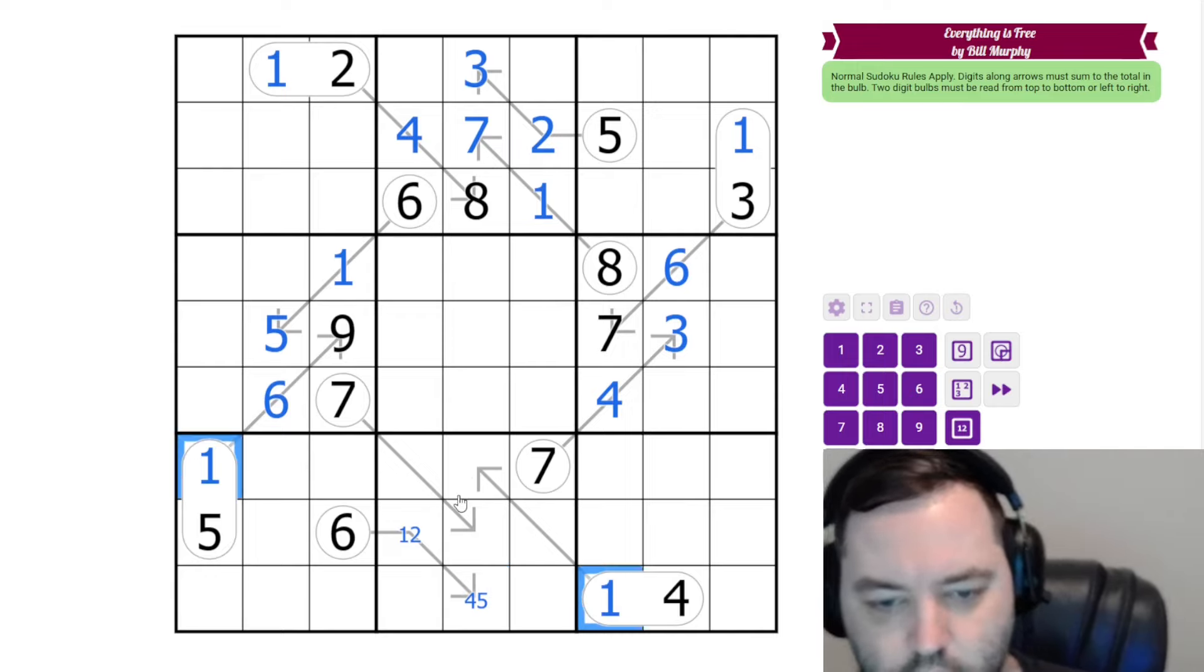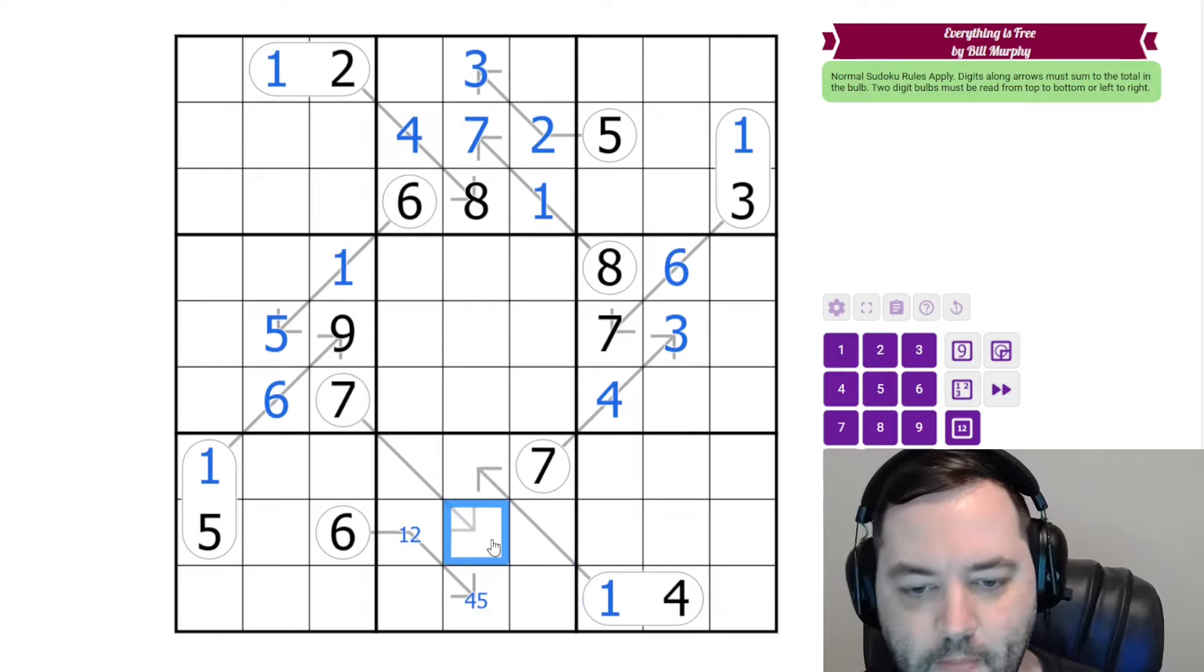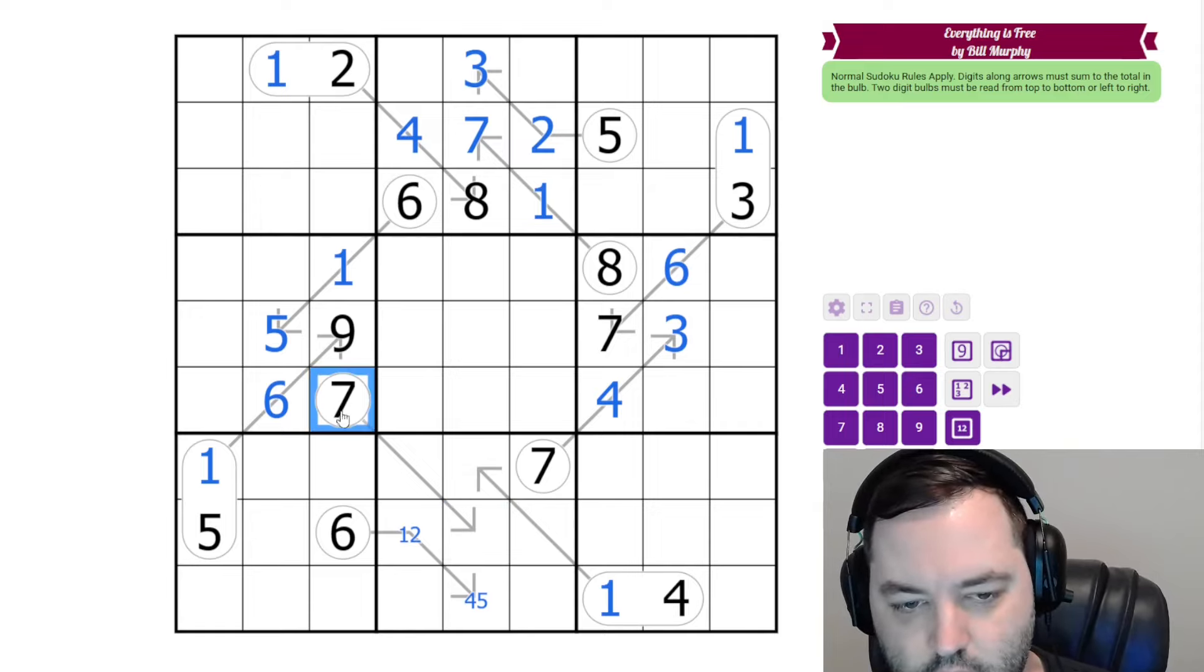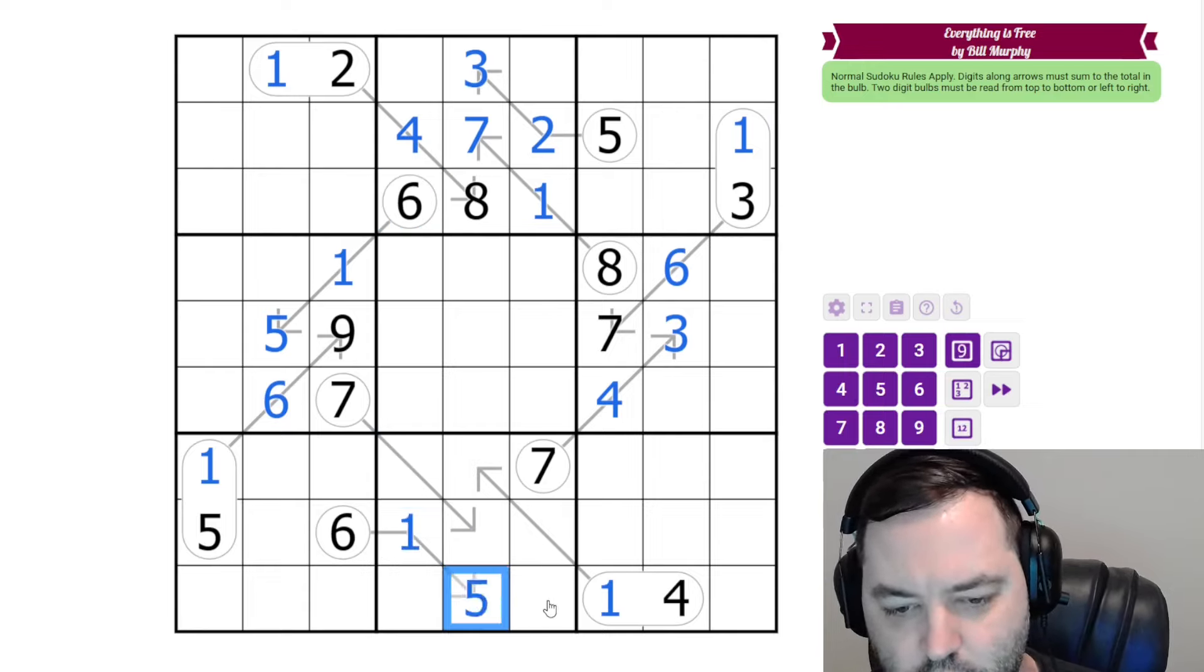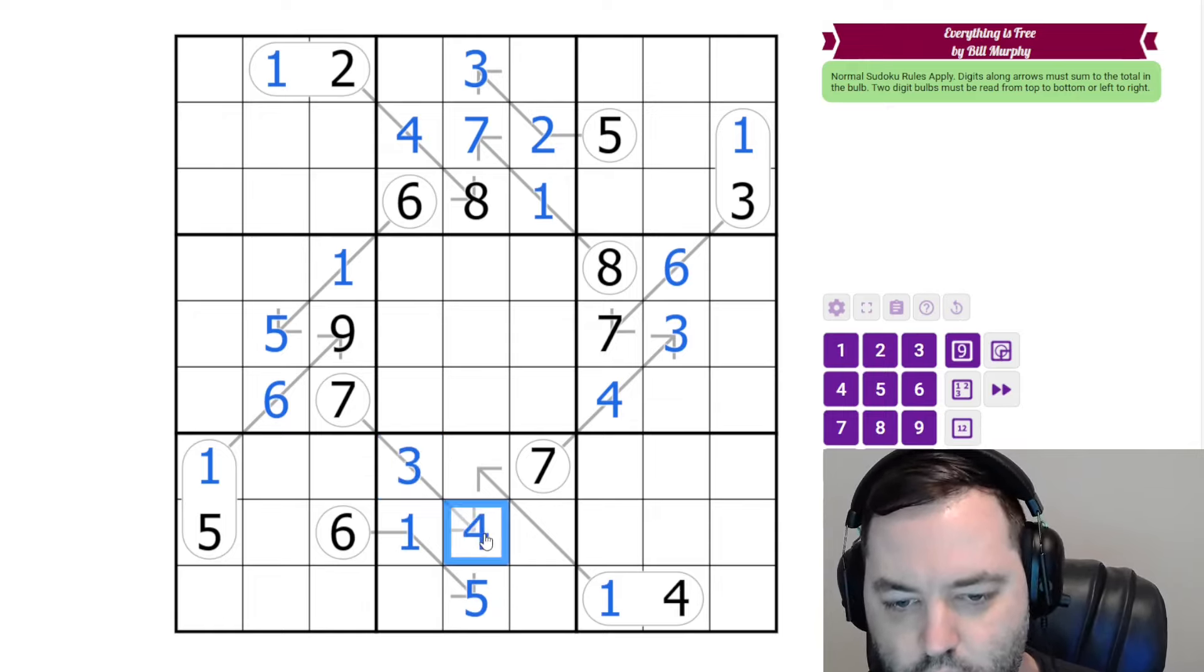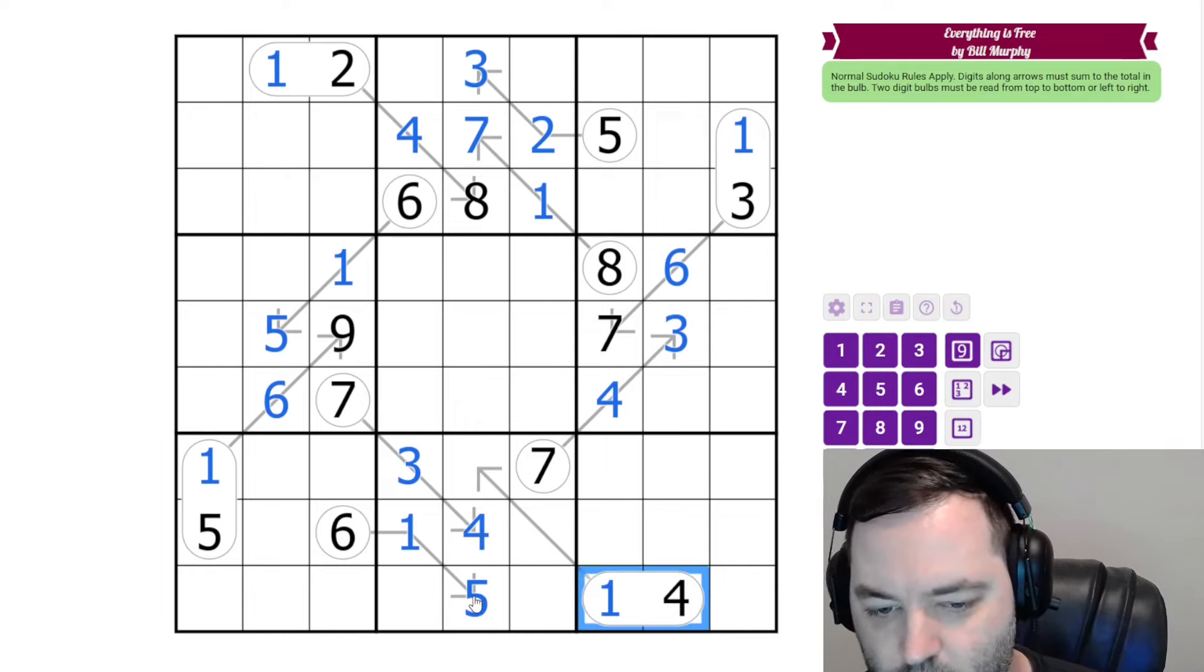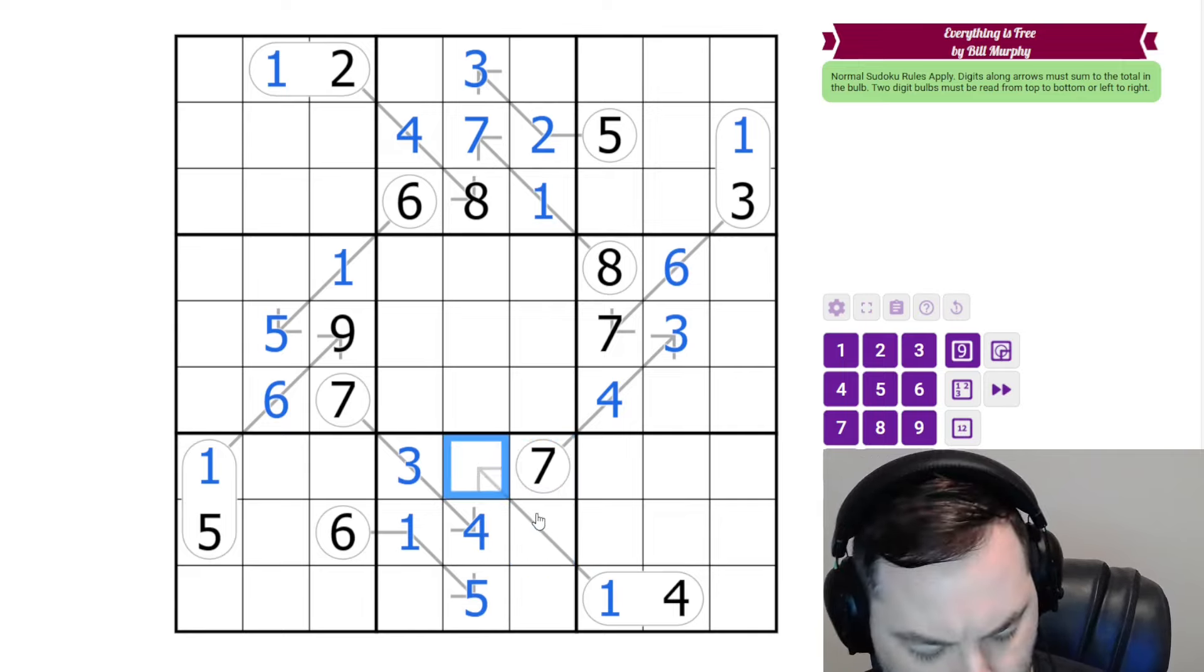It can't go here for multiple reasons. There's a 1 there. Also, we can't make 14 with a 1 here, 13 here. It also can't go here though, because we said this 7 can't be 1, 6. So 1 here would require 6 here, and that would break. So the only place for 1 is actually here. And that means this 7 can't be 2, 5 now. So this is 3, 4. And the 14 here is now resolved. It can't be 5, 9. It can't be 7, 7, even if it could repeat. So this is 6 and 8.